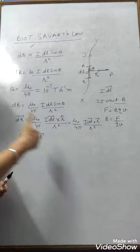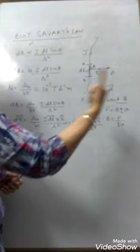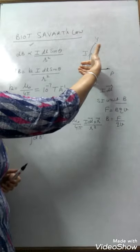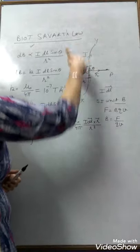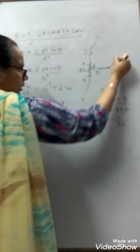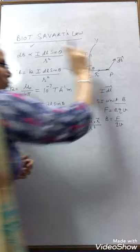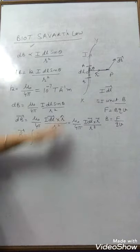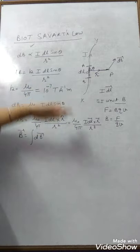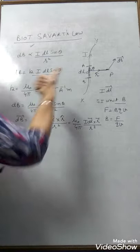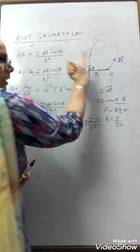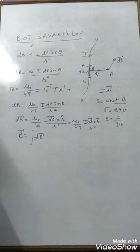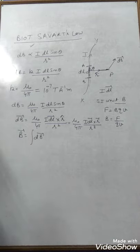The direction of current is along the wire. At point P, the magnetic field due to the small element is perpendicular to the plane of the board — or perpendicular to the plane of paper — and pointing inward. This is the right-hand thumb rule. This is Biot-Savart's law, which is used to find the magnetic field for a current-carrying conductor at the observation point.